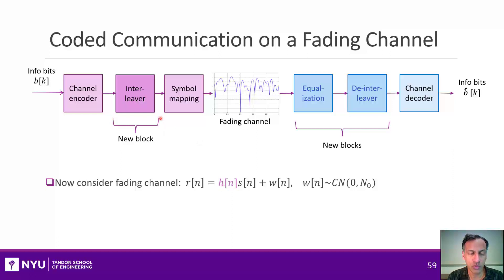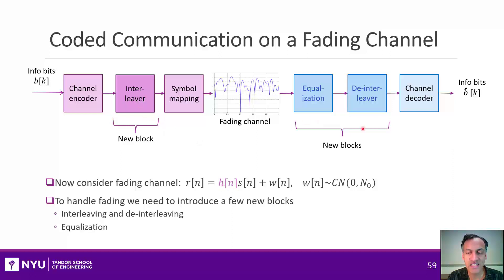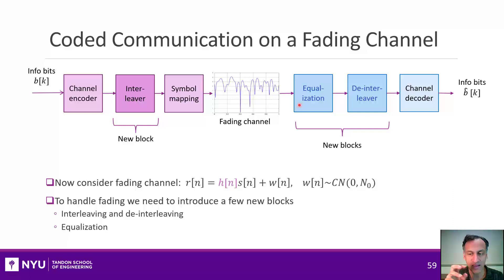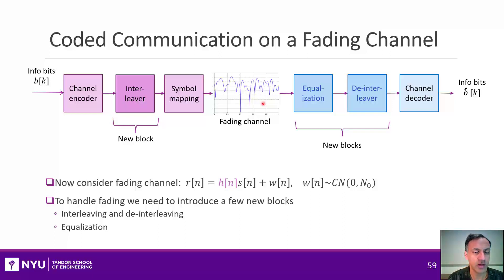To do coding over a fading channel, you just have to do a couple of little tricks. The first is you have to introduce what's called an interleaver and a de-interleaver, and you also have to do equalization. They're not that hard if you do them correctly — you will get good performance — but there are a lot of details, and many students mess up these details and don't get the performance they are expecting. So make sure you listen carefully and try to get all the details correct.